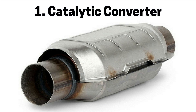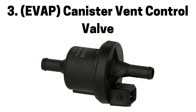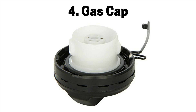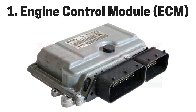Next pertains to emission systems. Number one is a faulty catalytic converter due to a rich air fuel mixture or engine misfire, which can cause blockage and restricted airflow, causing a check engine light. Number two is a faulty exhaust gas recirculation valve, also referred to as an EGR valve, which can also be caused by carbon buildup, diaphragm or vacuum leaks, causing a lean air fuel mixture, engine misfire, and a check engine light. Older EGR valves operate with vacuum while newer ones operate with vacuum, electric, or strictly electric.